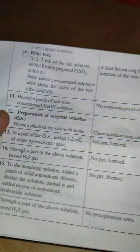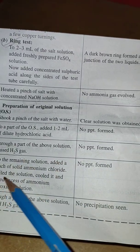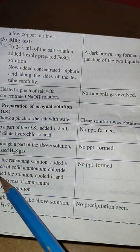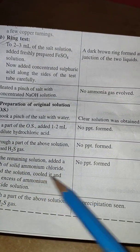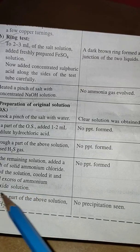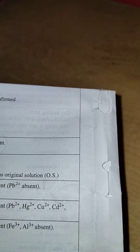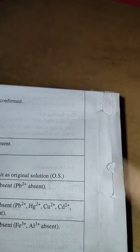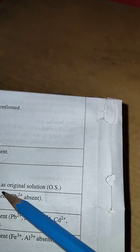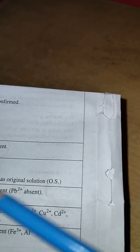To the remaining solution add a pinch of solid ammonium chloride, boil the solution, and add excess of ammonium hydroxide solution. No precipitate formed, that means group third is also absent, that is Fe³⁺, Al³⁺. All the cation parts are divided into group zero, group one, group two, group three, group four, group five. See in the lab manual how they differentiate these groups.